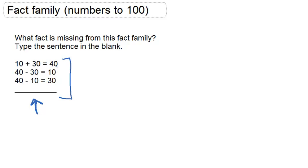So let's look at the other three and figure out which one's missing. We have 10 plus 30 equals 40. Then we have 40 minus 30 equals 10, and 40 minus 10 equals 30.